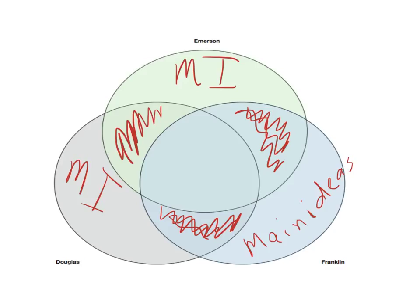If you are able to find any commonalities across all three, that would go in the center. That's optional — something you can think about if you want. Once all of this is done, students are going to go back into what they've written about all three excerpts and highlight anything they think specifically agrees with or disagrees with Carr. So now we're bringing in a fourth text, and we're going to do that by highlighting.